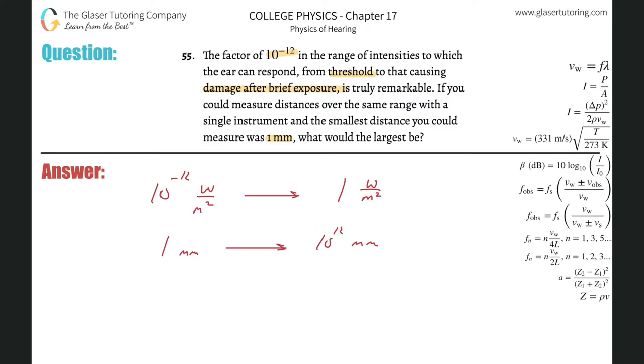You can convert this into kilometers - basically just subtract six from the exponent, so it's 10 to the six kilometers. That's a million kilometers. Our ears can measure something similar to if you had a measuring device that could measure all the way down from a millimeter.